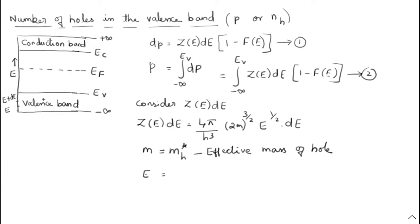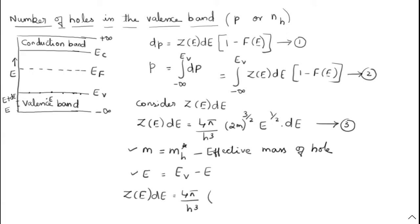The second modification is the energy value E. We are talking about the energy of the electron within the band. EV is the energy of the top of the valency band, where holes will be at rest, so EV is the potential energy. Now E is replaced by EV minus E, where EV is the maximum energy and E is the kinetic energy of the hole. So the modified Z(E) · dE = (4π / h³) · (2m_H*)^(3/2) · (EV − E)^(1/2) · dE. This is equation number 4.